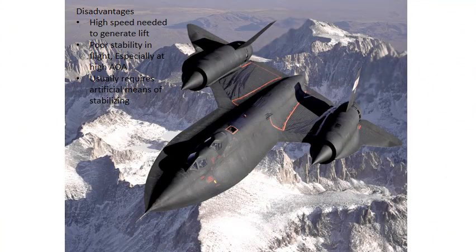Disadvantages of the delta wing: this wing needs very high speeds to even generate enough lift to fly. That's going to make for long takeoff rolls and long landing rolls, which is definitely a factor when considering airport availability. They're also not very stable in flight, especially at high angles of attack — they're just going to want to wave through the air. They usually require artificial means of stabilizing, with computers, gyros, and other systems so that the pilot can actually control it. To the pilot it seems like a normal airplane, but there's a lot going on behind the scenes.